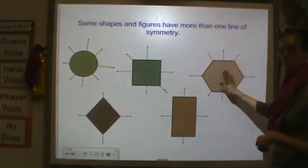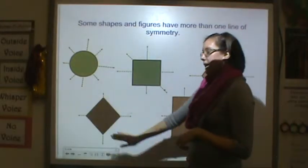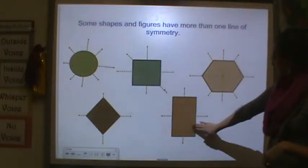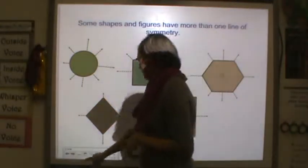A square has more than one line of symmetry. Here is a hexagon, more than one line, a diamond, and a rectangle, more than one line of symmetry.